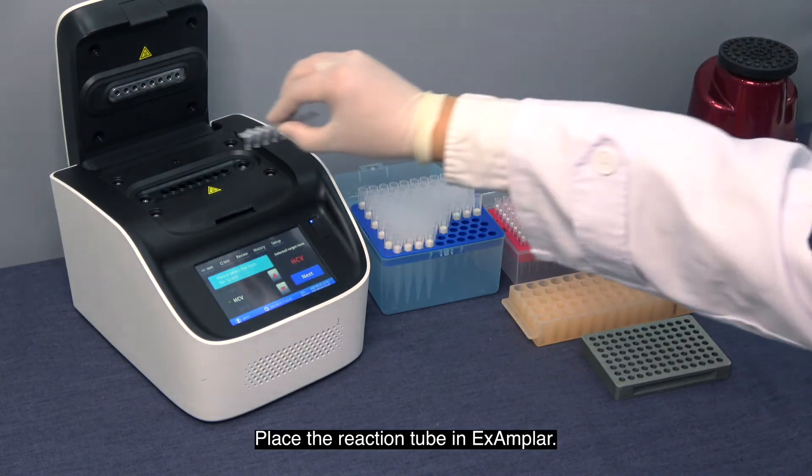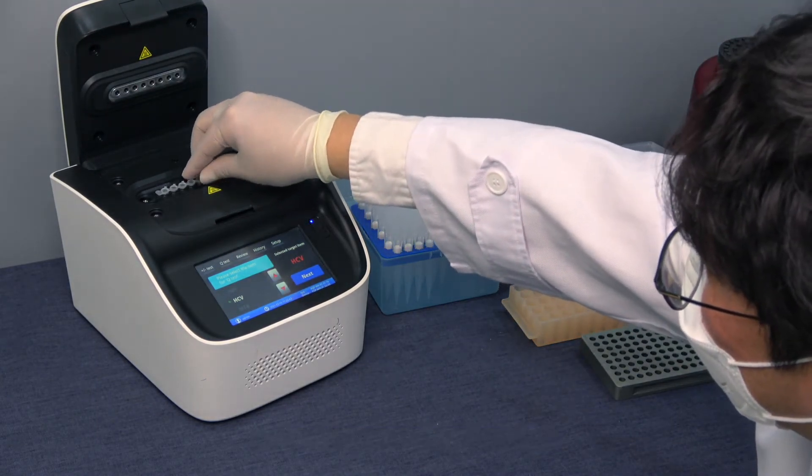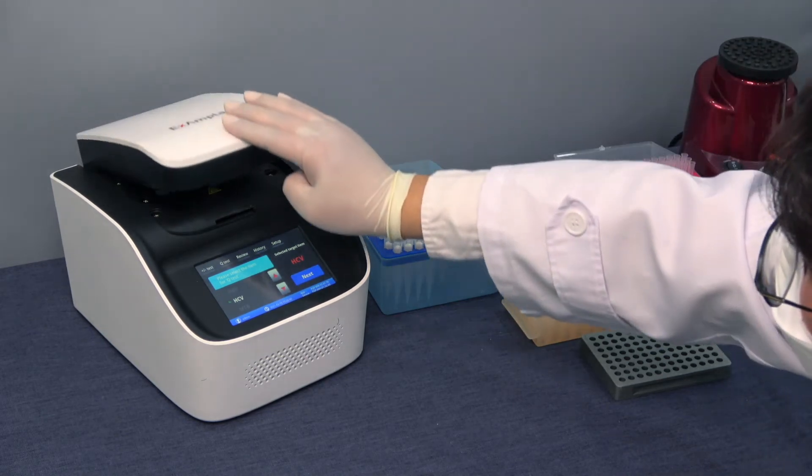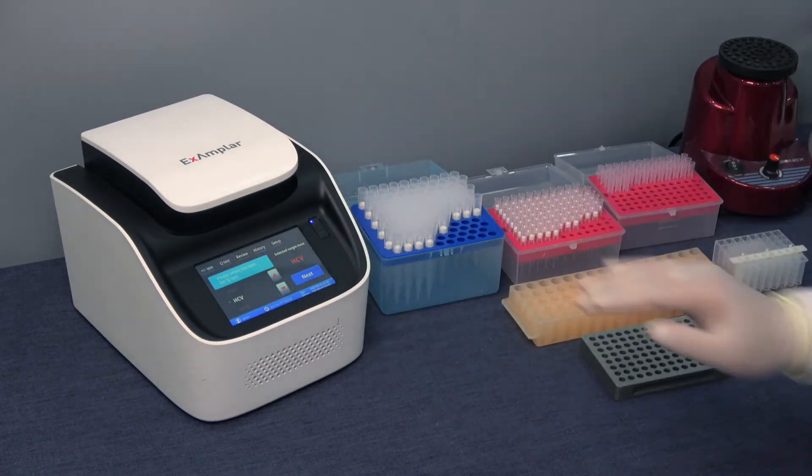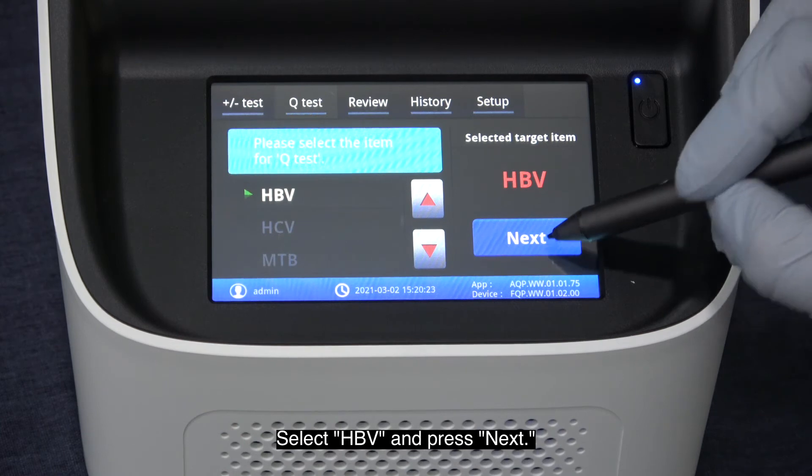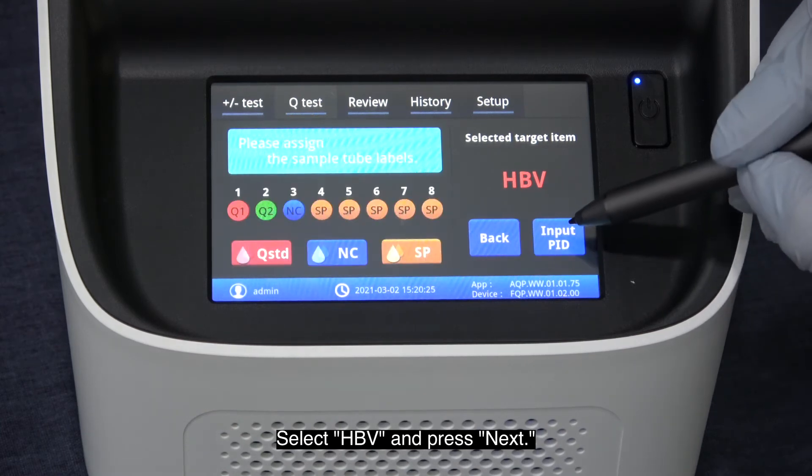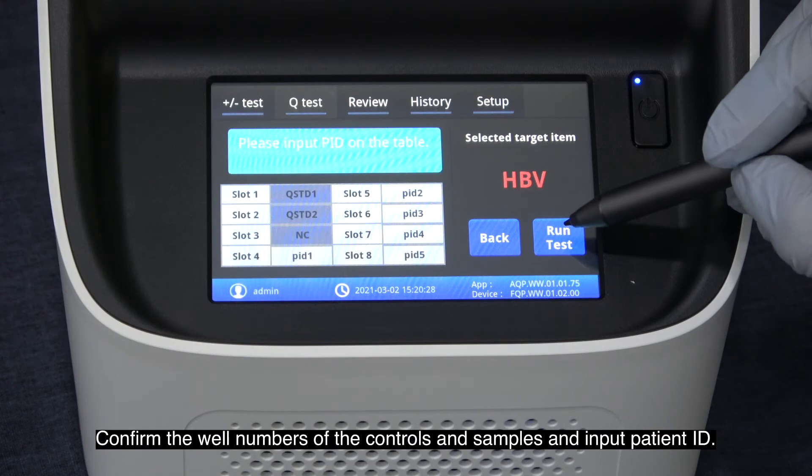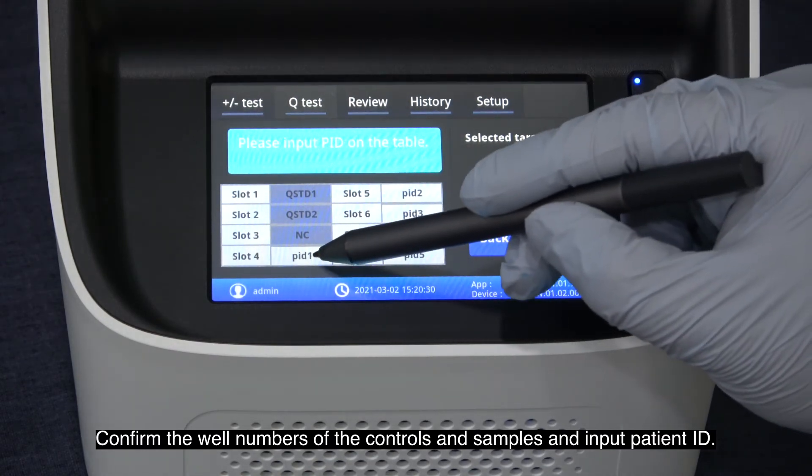Place the reaction tube in XAMPPAR. Select HBV and press next. Confirm the well number of controls and samples and input patient ID.